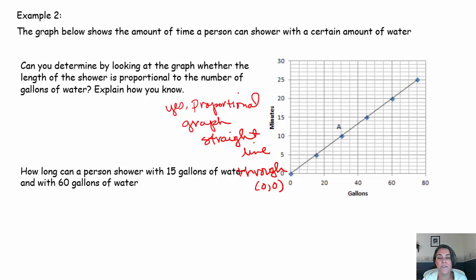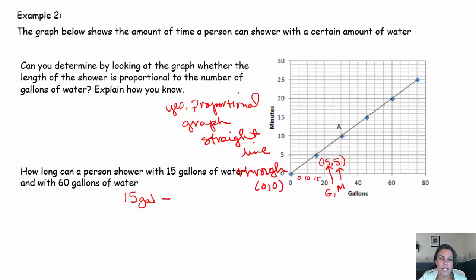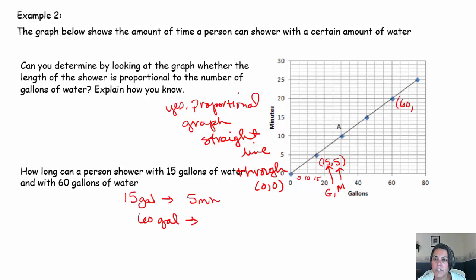A straight line through the origin guarantees this is a proportional relationship. How long can a person shower with 15 gallons of water and with 60 gallons? The scale goes by 5s, so 15 gallons corresponds to a 5-minute shower. That means 15 gallons translates into a 5-minute shower. For 60 gallons, looking at the graph — that was a 20-minute shower. That's how you use points on the grid to interpret the situation.